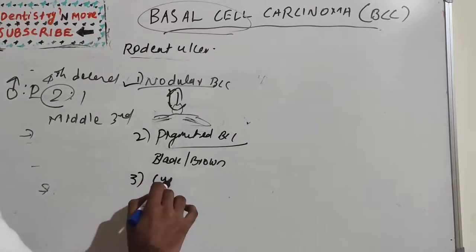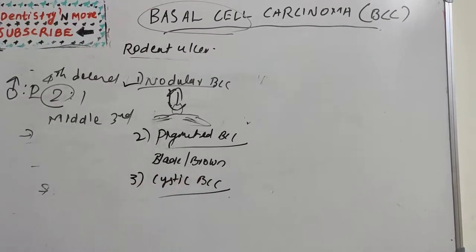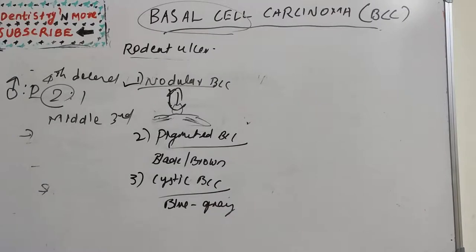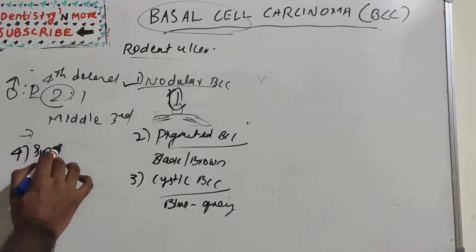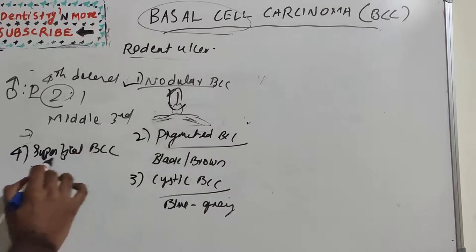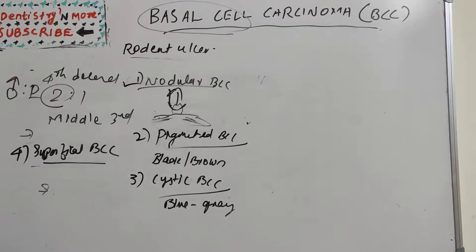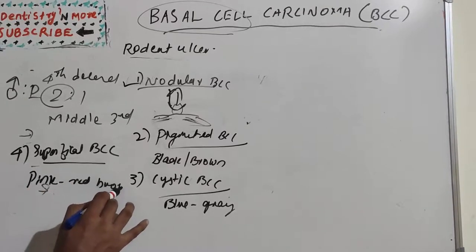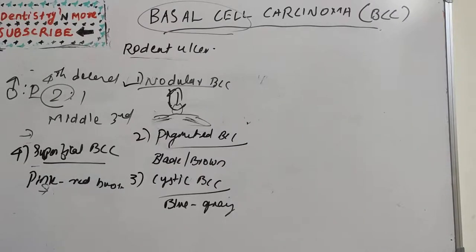The third subtype is cystic basal cell carcinoma, which may present as a translucent blue-gray cystic nodule that can mimic benign cystic lesions. The fourth subtype is superficial BCC, which presents as scaly patches or papules commonly on the trunk that are pink to red-brown in color, often with central clearing and a thread-like border.